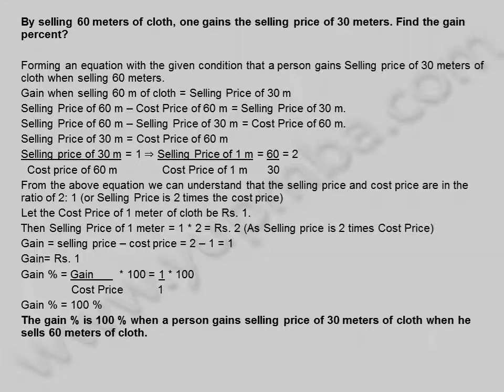The gain percentage is 100% when a person gains the selling price of 30 meters of cloth when he sells 60 meters of cloth.